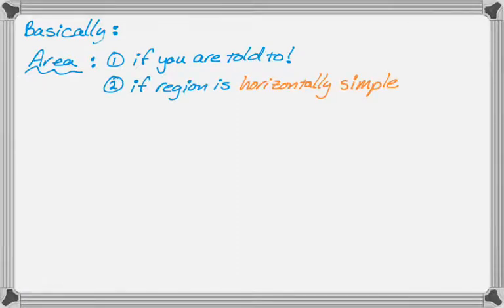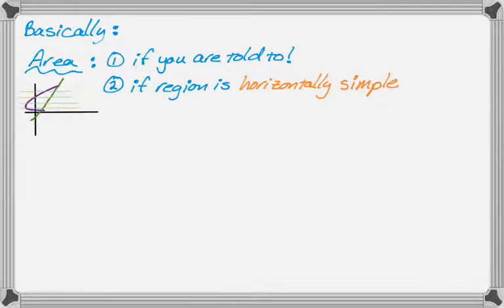You might not be totally familiar with that idea. What that is: if we draw our region and horizontal lines pass through it, and as they pass through the region the left curve and the right curve never switch, then the region is horizontally simple. It's actually a little easier if a region is horizontally simple to use dy instead of dx, because the top and bottom curves on the left side are the same curve, so you'd have to do a lot of algebra to set it up in terms of x.